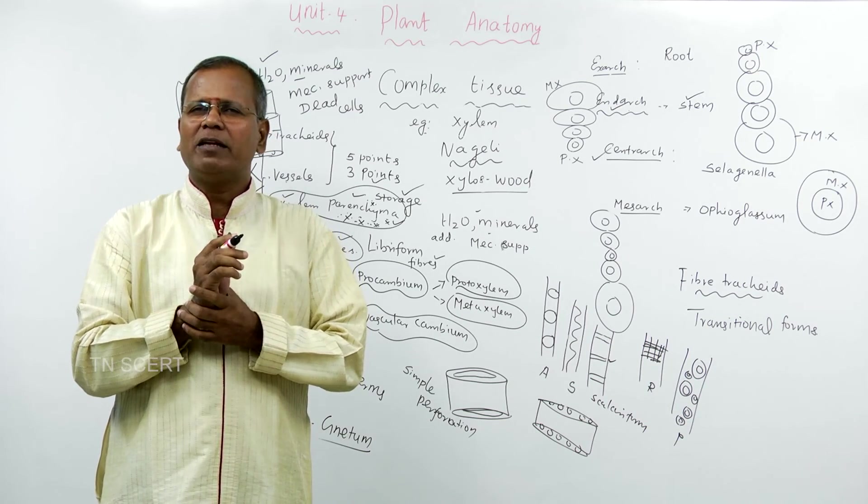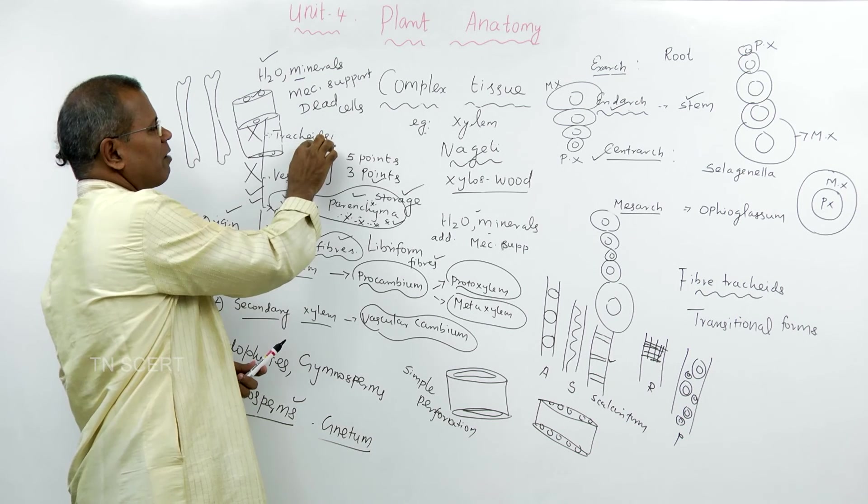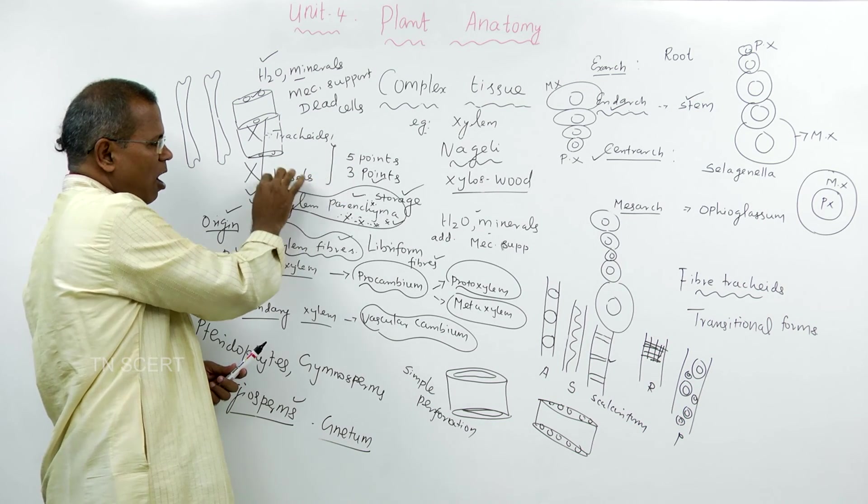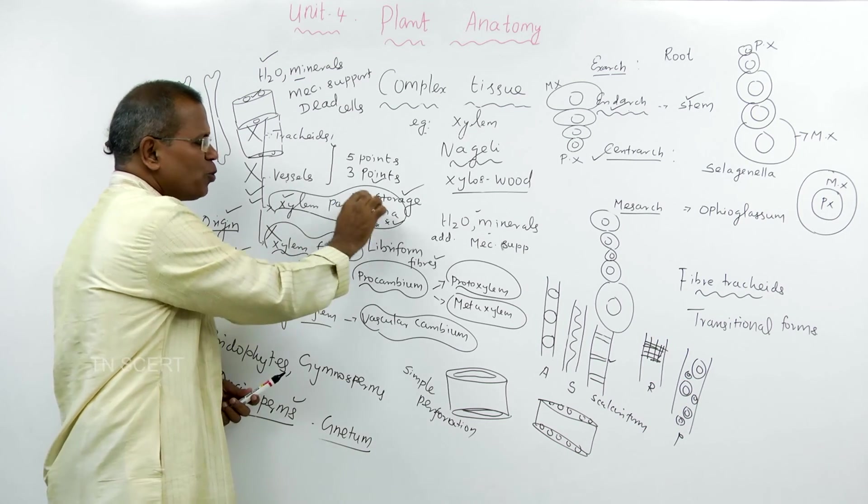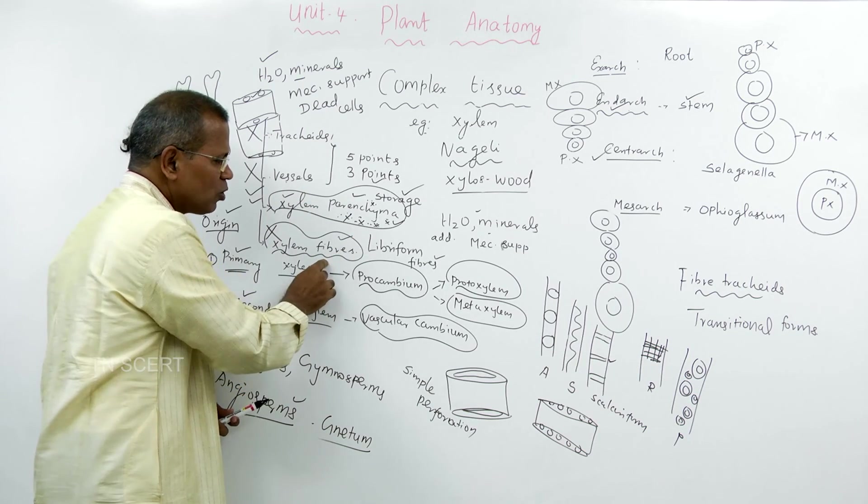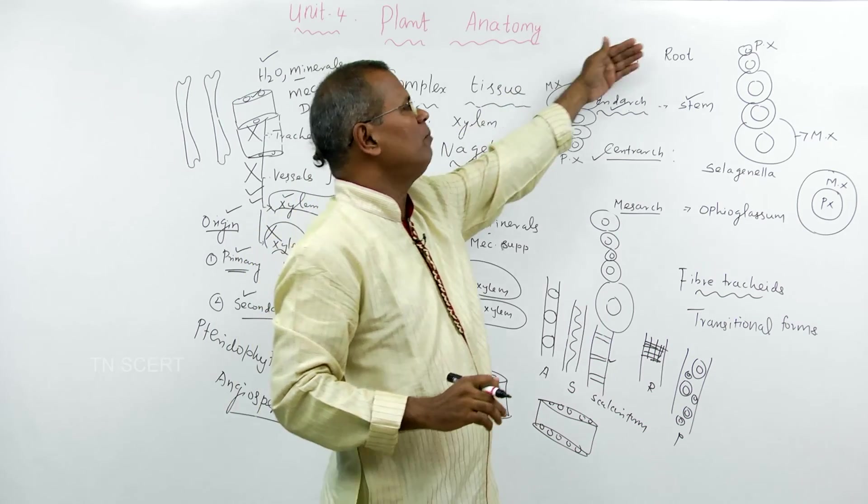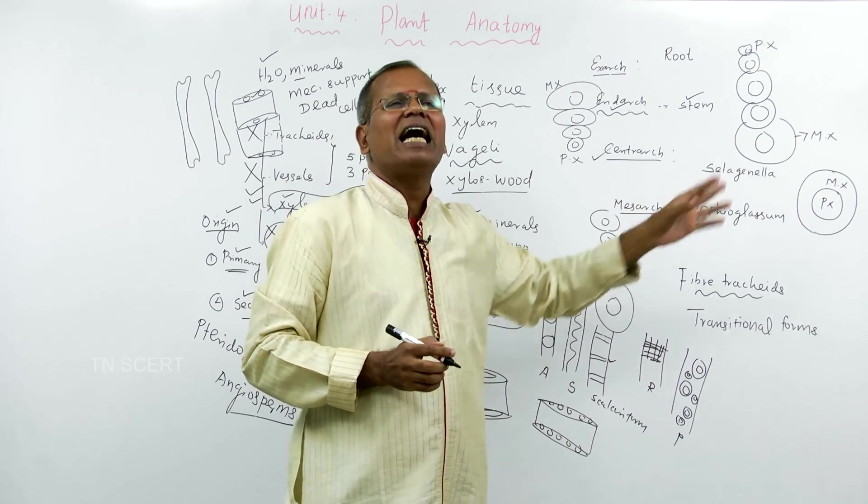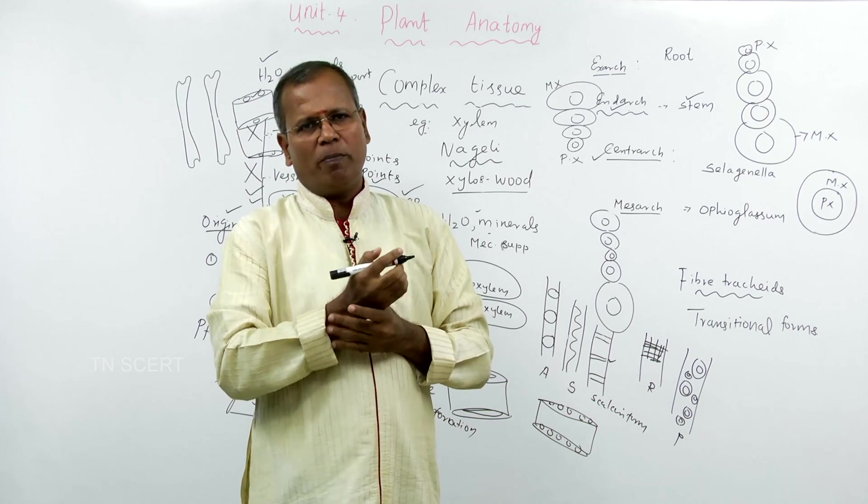Important points about xylem. Tracheids are the water conducting elements of pteridophytes and gymnosperms. Vessels are the water conducting elements of angiosperms. Xylem parenchyma is the only living tissue in xylem. Xylem fiber is also known as libriform fibers. Xylem exarch is seen in root. Endarch is seen in stem. Centrarch in Selaginella, mesarch in Ophioglossum. These examples make xylem very clear and easy to understand.